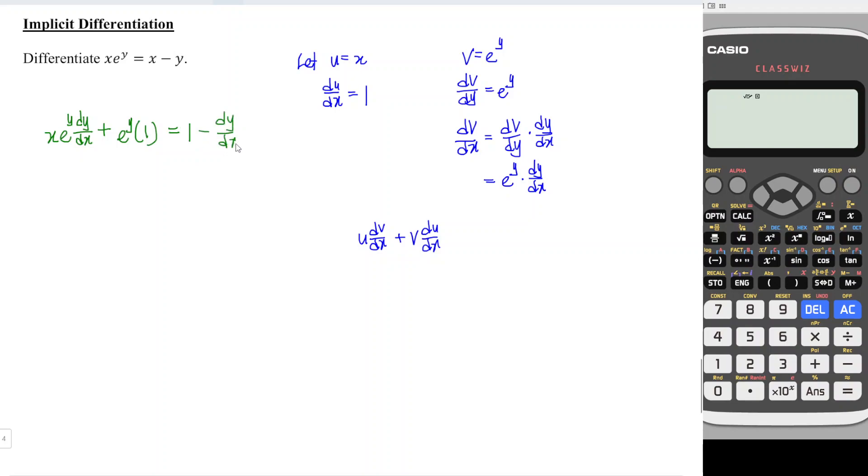What we have to do next is just rewrite the equation by grouping dy/dx on one side without dy/dx on the other side.